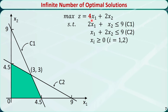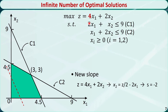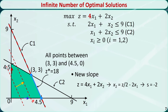If we modify the objective function and change the coefficient from 3 to 4, the feasible region will not change, but the slope will change from minus 3 over 2 to minus 2. This is the same as the slope of the first constraint c1. Moving the line in parallel towards the top right corner, we find that the last intersection before leaving the feasible region is a line segment. We will have an infinite number of optimal solutions between point (3, 3) and point (4.5, 0). Z* equals 18.